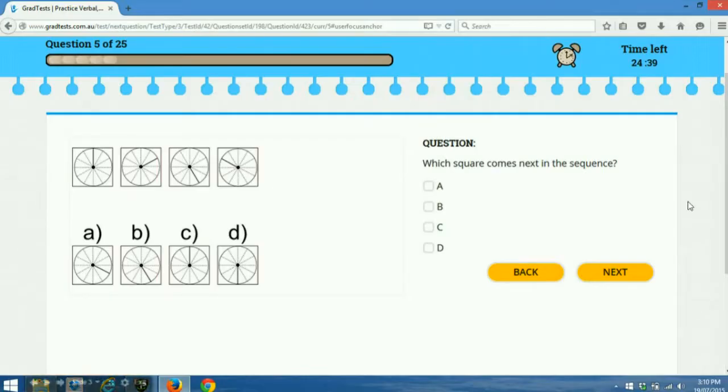So from the first to second square, the hand moves two segments, and from the second to third, the hand moves three segments, and from the third to the fourth, the hand moves five segments. So that sounds like to me it's moving by an increasing number of prime numbers. So the next prime number after five is, of course, seven. So then the next point it has to be is here. That's around seven segments. So which answer is that? It's answer B. So B would be the correct answer here.